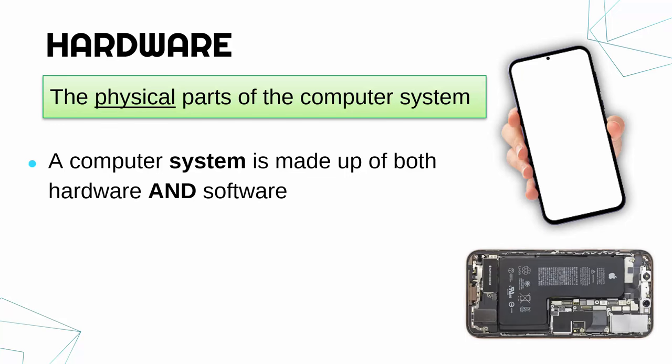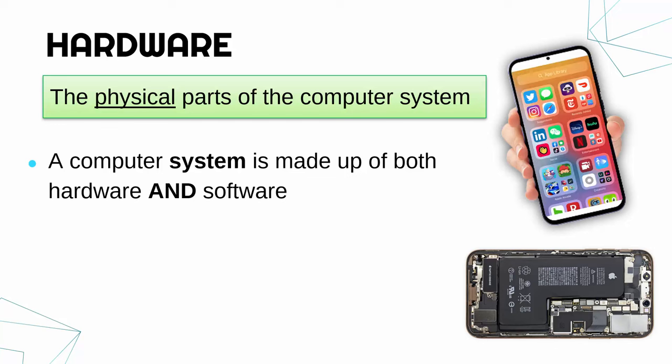So the software — things like the apps — and the hardware — things like the CPU, motherboard, touchscreen, camera, etc. The programs running on the app, in this example, are the software. We can't physically touch them.